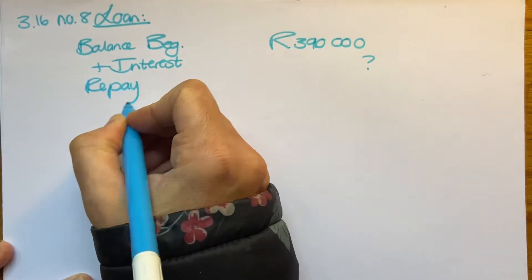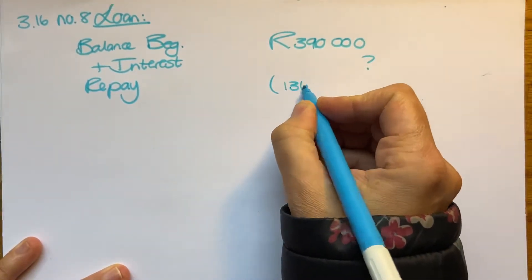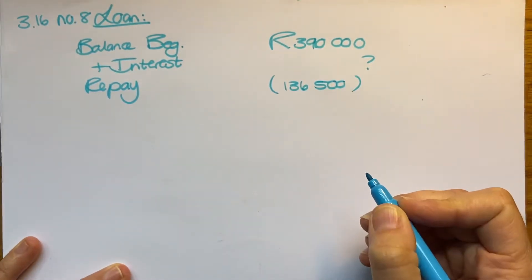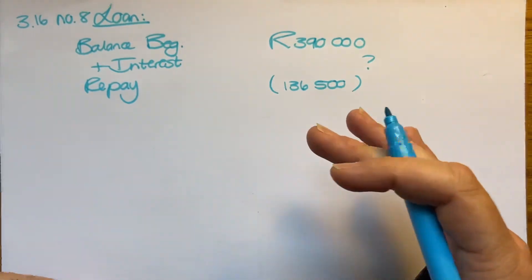They've given you the amount there. You've paid 136,500. You have paid back during the year. So that's for this year, how much you repaid back. That 78,000 that they mentioned at the bottom has got nothing to do with this financial year.